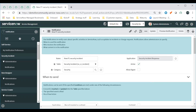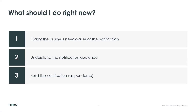Absolutely. So, Luke, what would you recommend our audience does right now at the end of this tutorial? Before you go create a new notification, you want to stop and clarify the business need — the actual desired business outcome and the value of that notification you're thinking about. It's okay to drop it and say you don't really need it. Once you've determined that yes, you do need a notification, understand your notification audience and what kind of information they need in order to be successful and to help protect your organization. Then go about building your notification, taking all of these steps into consideration, following your normal development practices and testing procedures before taking it into a production environment.